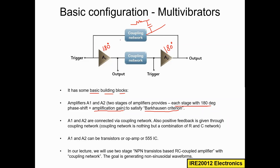A1 and A2 can be either transistors, an operational amplifier, or a 555 IC. In our lecture, we will use two-stage NPN transistors with an RC coupled amplifier. We will use two NPN transistors and the RC coupling network to design this astable multivibrator, with the goal of generating non-sinusoidal waveforms.